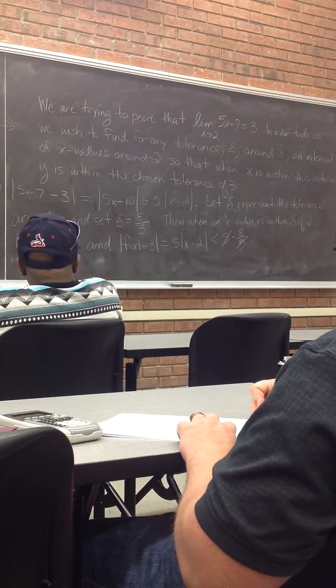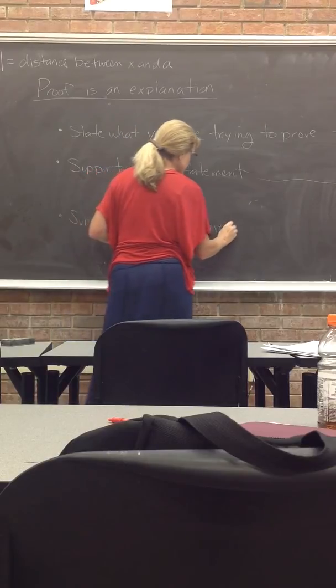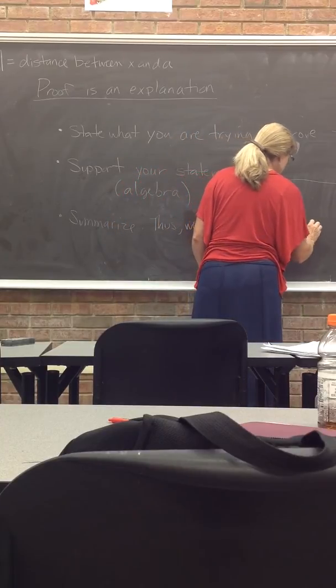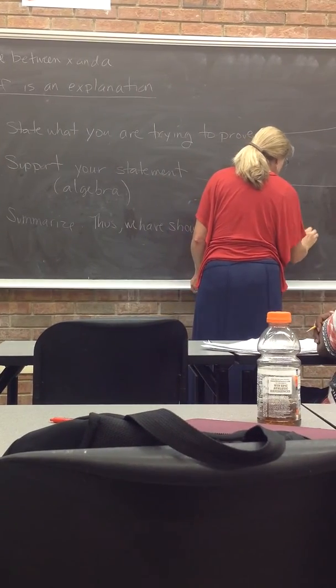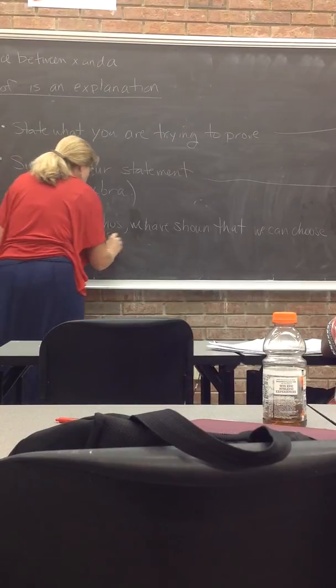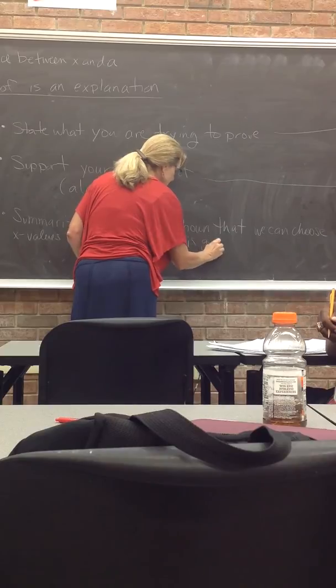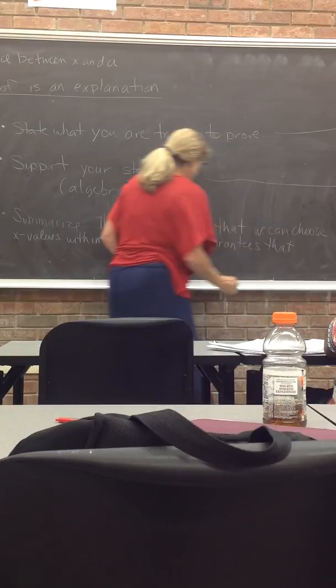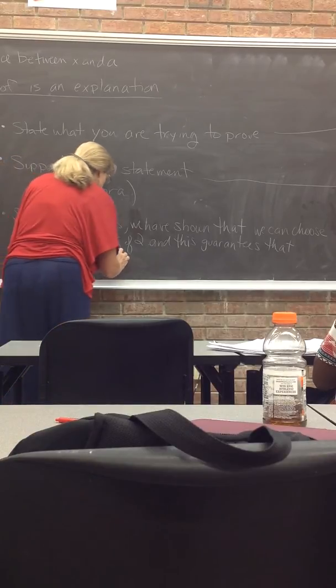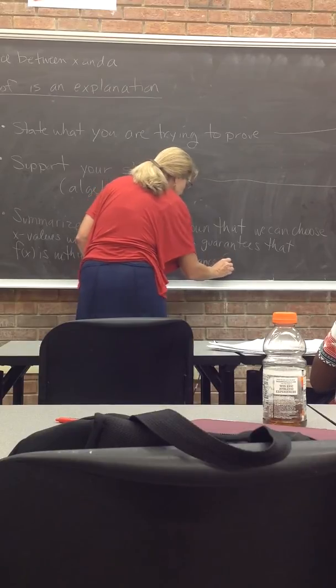So then my summary... I was writing a little summary over here because I'm writing down a little more over there. We have shown that we can choose x values within epsilon over 5 of 2, and this guarantees that f of x is within epsilon of 3.